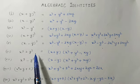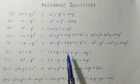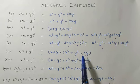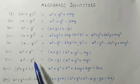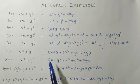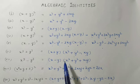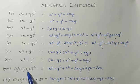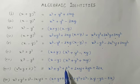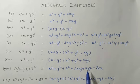The sixth identity: x³ + y³ = (x + y)(x² + y² - xy). The seventh: x³ - y³ = (x - y)(x² + y² + xy). The eighth: (x + y + z)² = x² + y² + z² + 2xy + 2yz + 2zx.